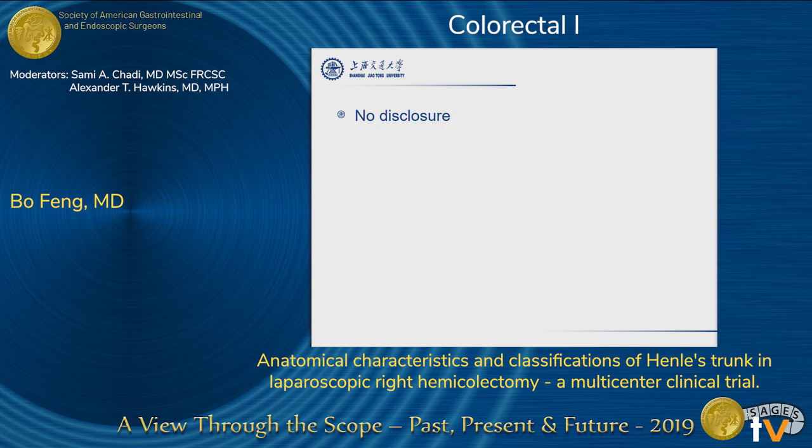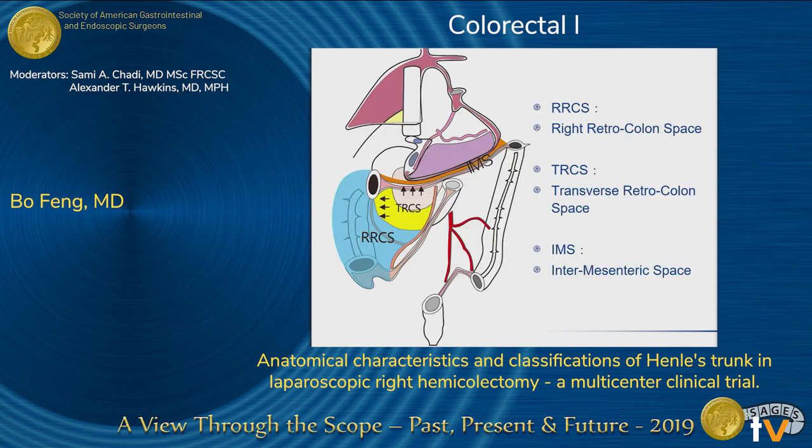There is no disclosure for this study. As we all know in laparoscopic right colectomy, there is certain surgical space we need to focus on. There are three major different spaces: one is the right retrocolon space, the second one is the transverse retrocolon space, and the last one is the intermesentric space.